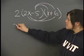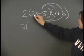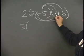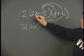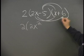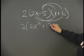So it'll look something like this: 2 and then we keep the brackets. It'll be 2x times x equals 2x squared and then 2x times 6 is 12x.